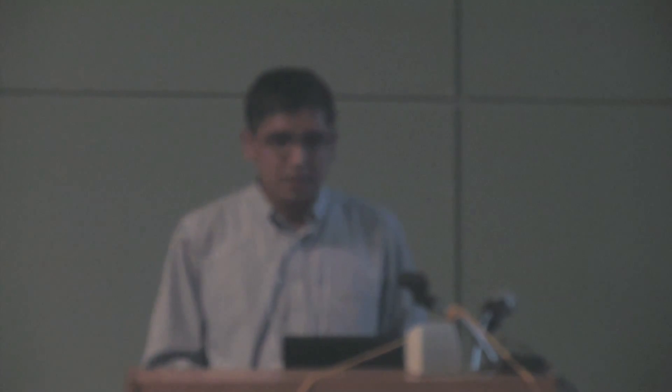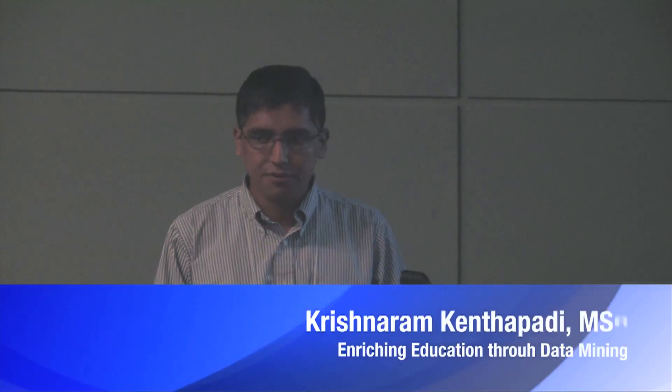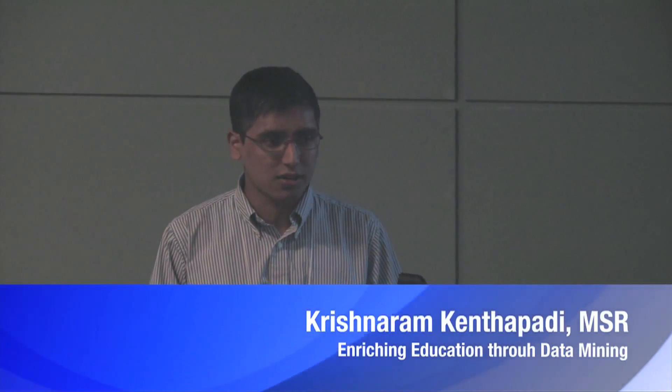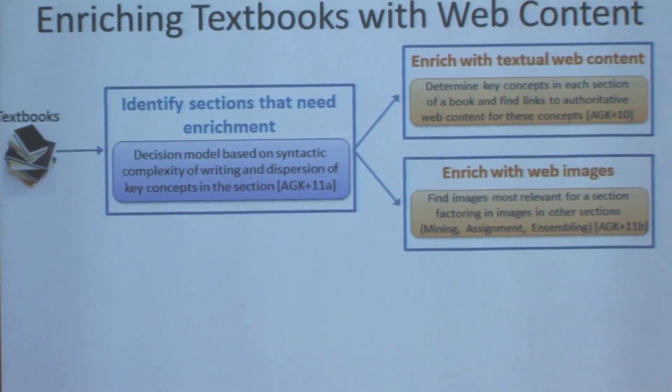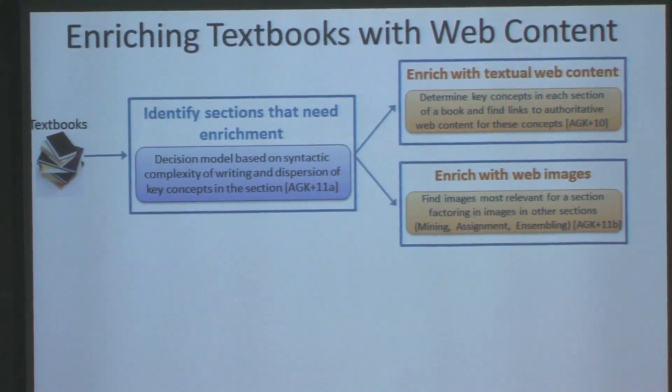Augmenting textbooks with relevant web content. The way we do this is we first identify, given a textbook, sections that are not written well and which can potentially benefit from such augmentation. Once we identify such sections, we augment them with relevant web content as well as images.